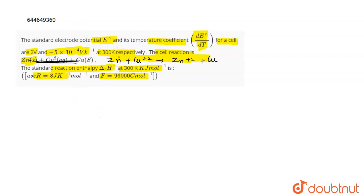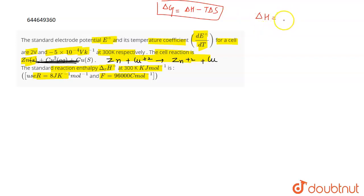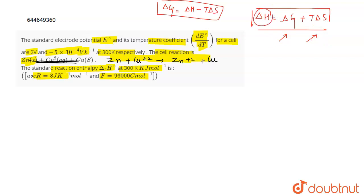To find ΔH, we use the relation: ΔG = ΔH - TΔS, which gives ΔH = ΔG + TΔS. So if we find ΔG and TΔS, we can find ΔH. The standard free energy is given by: ΔG° = -nFE°cell.